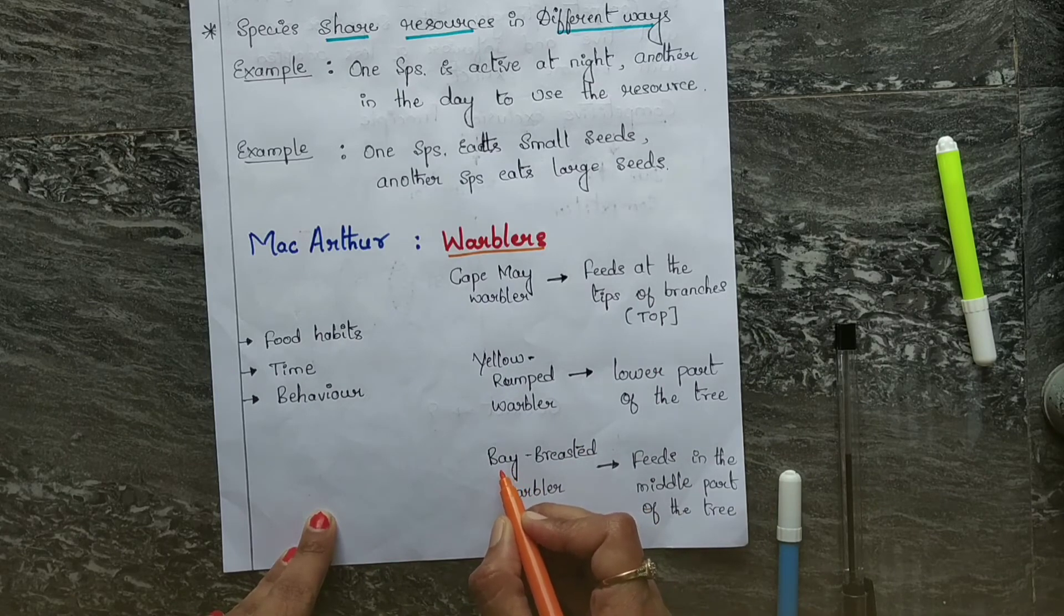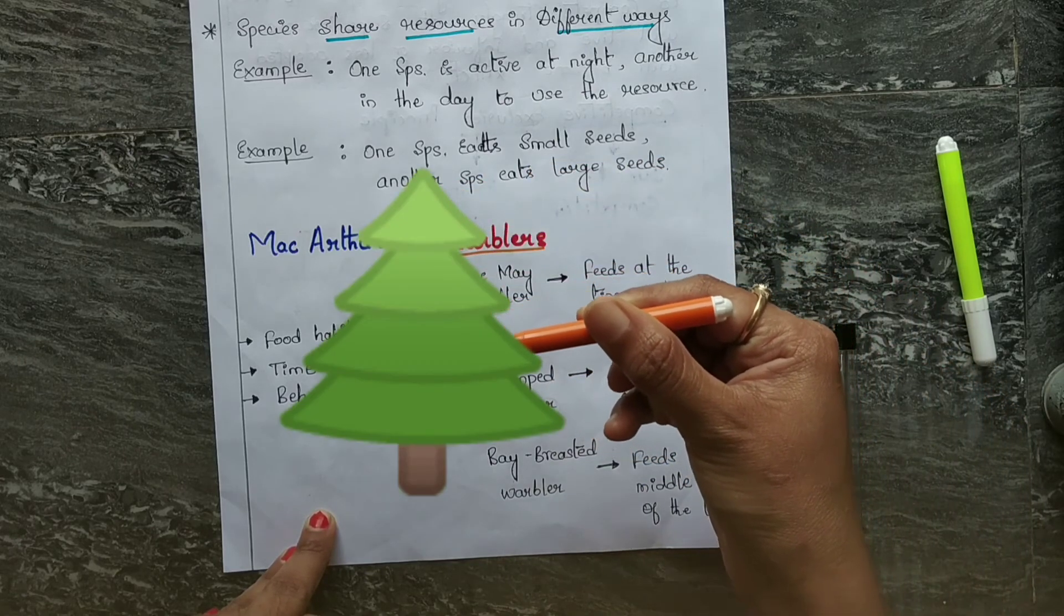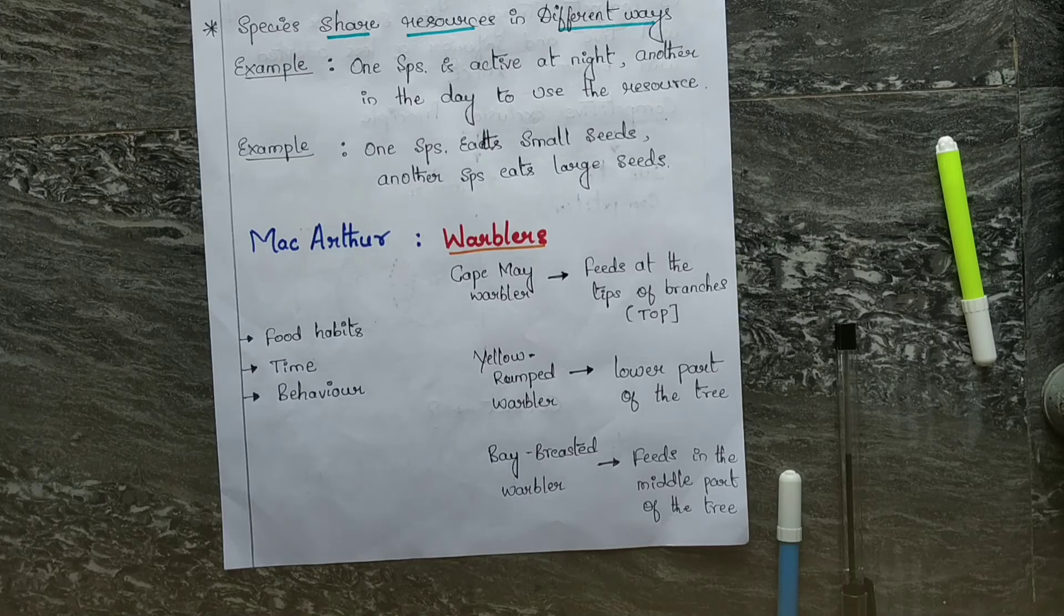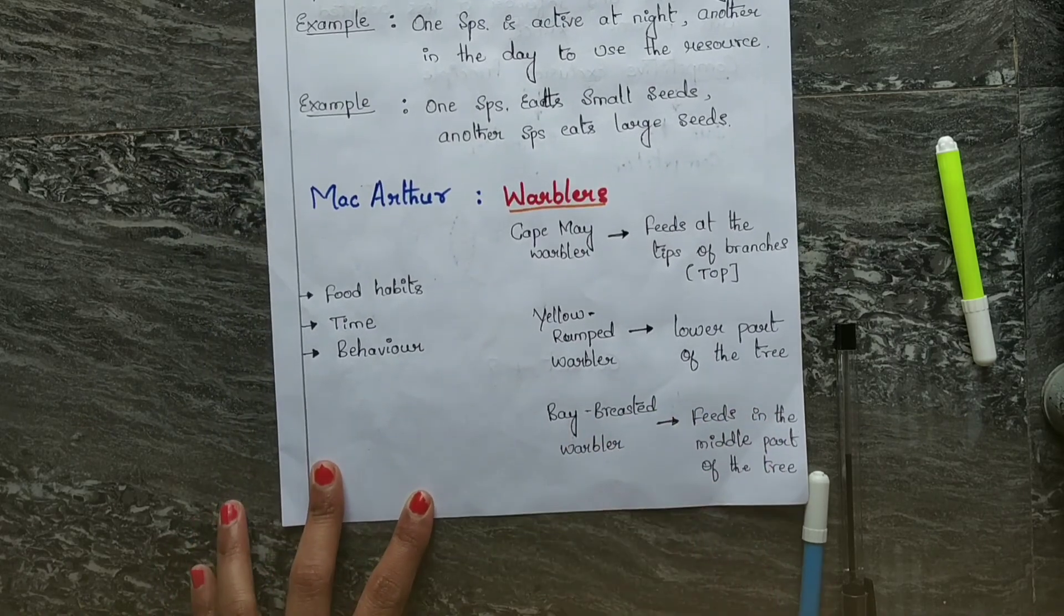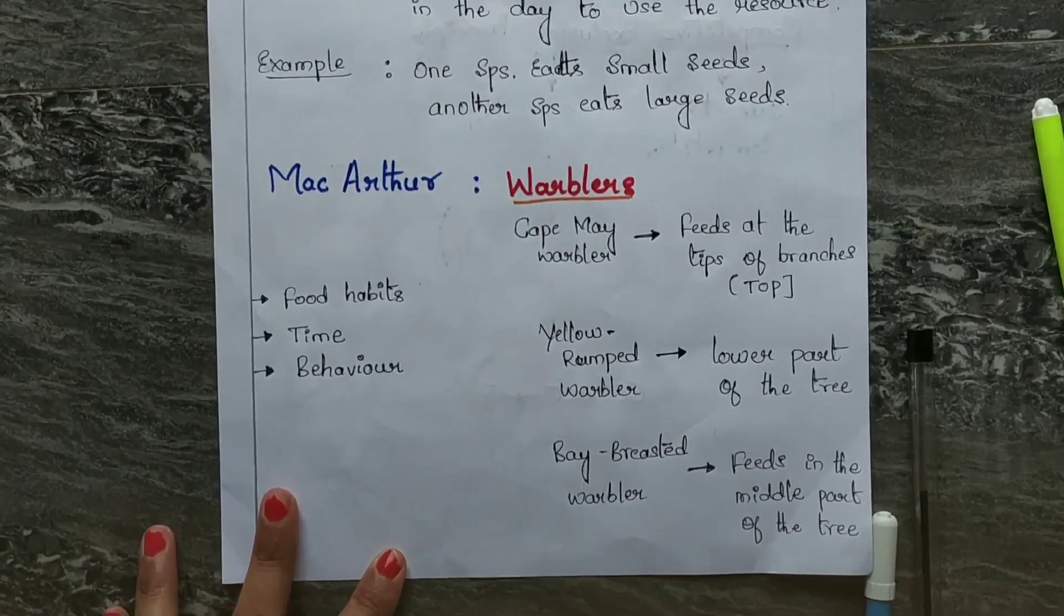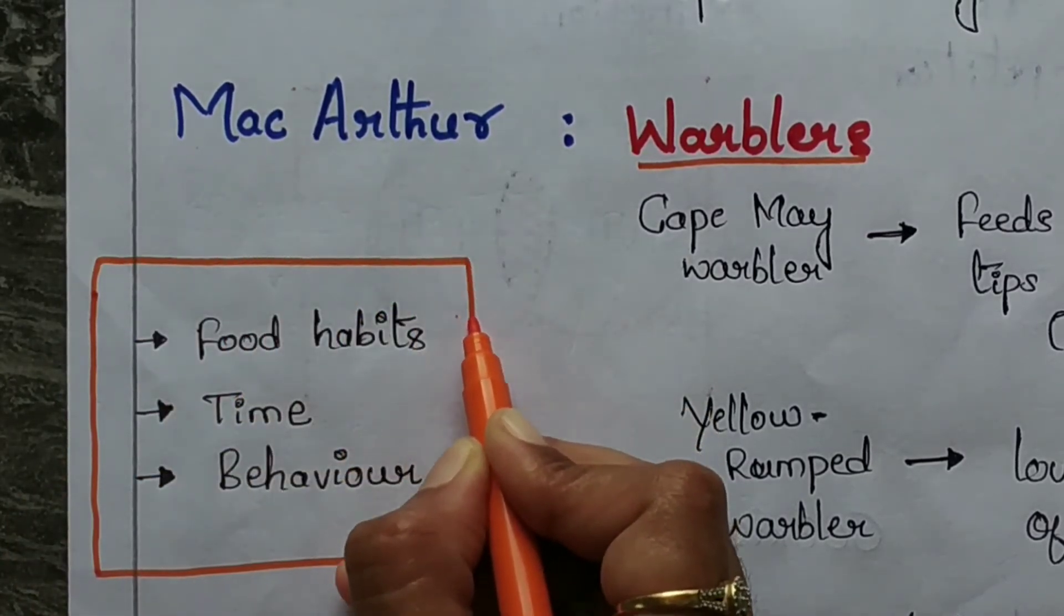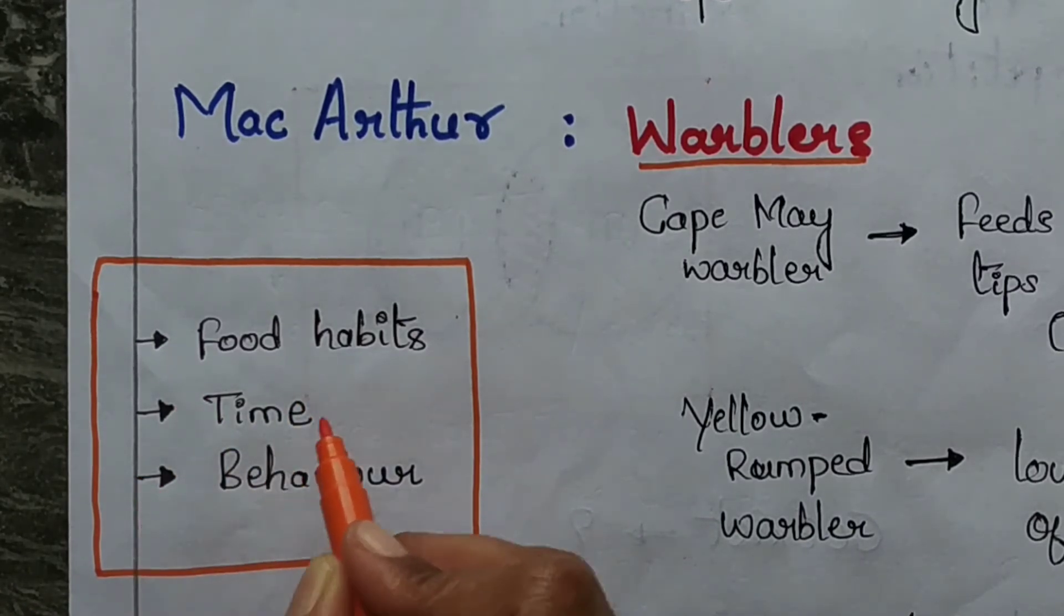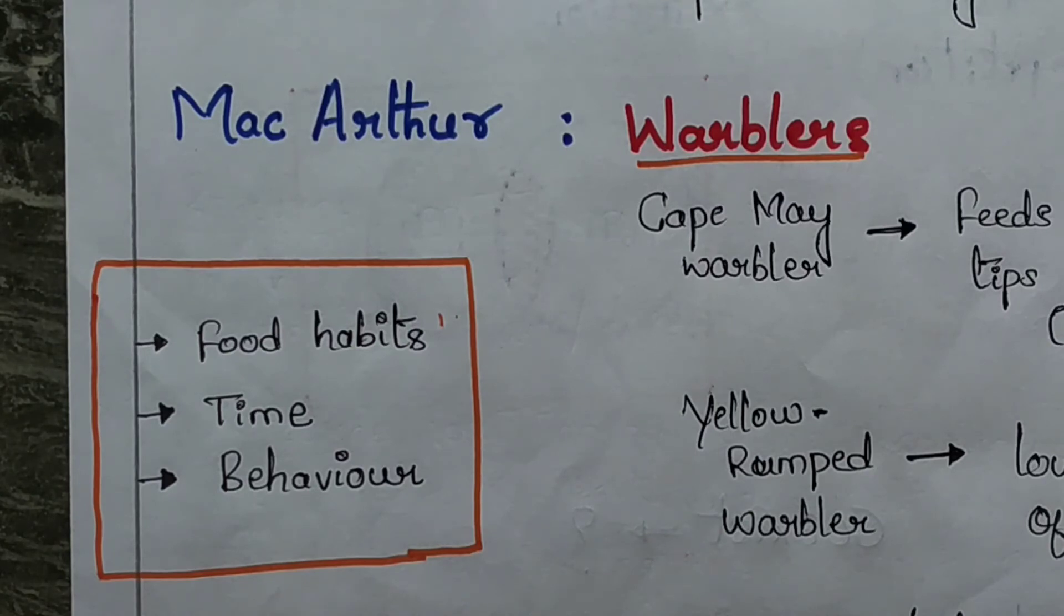Another warbler, the Bay-Breasted Warbler, feeds in the middle part of the tree. He observed from nature that even though competition exists, they can reduce the competition and coexist in the same area using the same resource. Here we can say that by using food habits, by changing the timing, or by changing the behavior - they can change the time, the behavior, or the food - they can do resource partitioning and coexist.